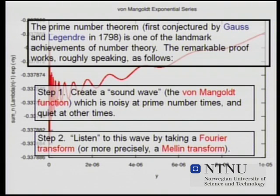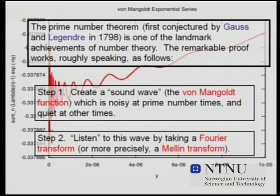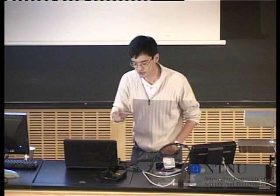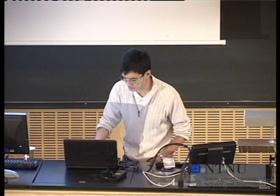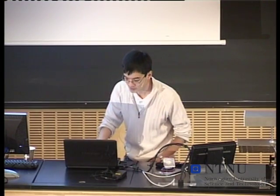So at time one you're quiet, time two you make a sound, time three you make a sound, four is quiet, five, seven, eleven, thirteen make sounds, and so forth. You get some sound waves. The amplitude of this wave has a special formula — you actually use something called the Von Mangoldt function.